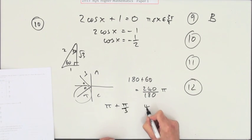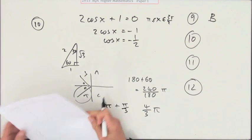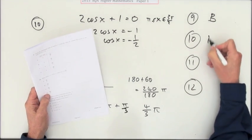Or you could start off by saying π plus, and that's π upon 3, so that's 3 upon 3 and 1 upon 3. So either way, 4 upon 3 π. 4 upon 3 π is D.